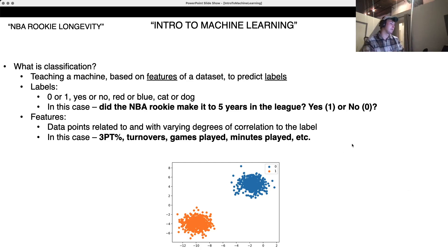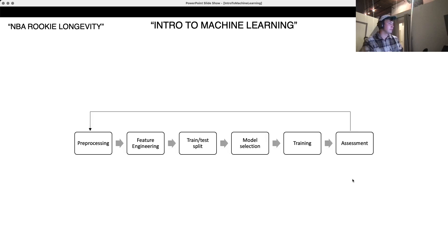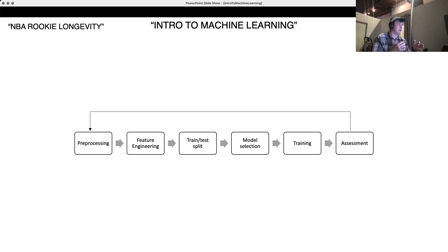Here's kind of a visual representation. There are only two features here — the X and Y axis — and this is how the machine has classified these data points. Here's my idea of what a machine learning process pipeline looks like.